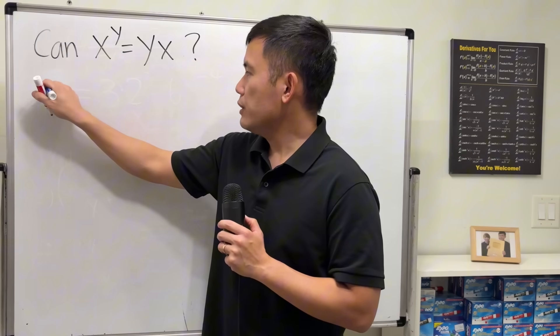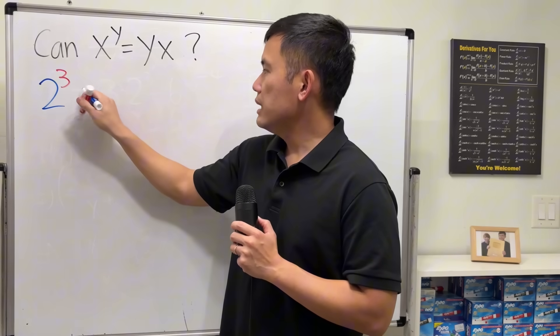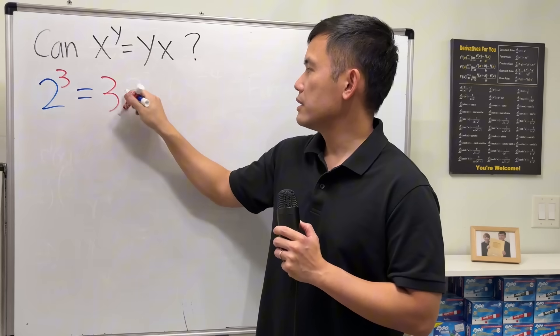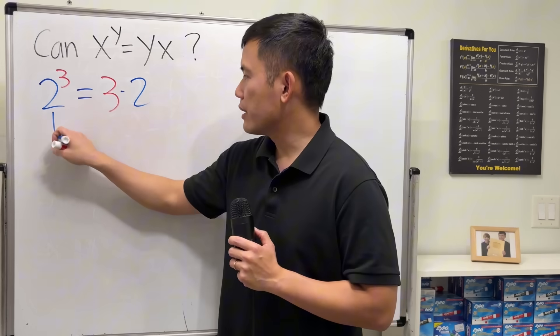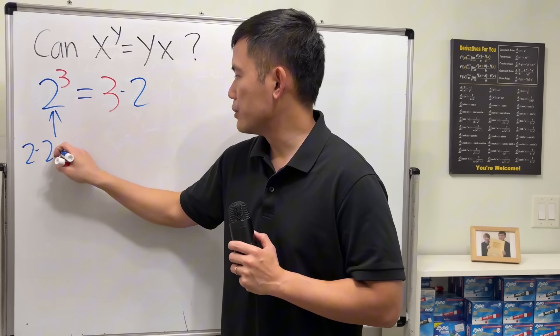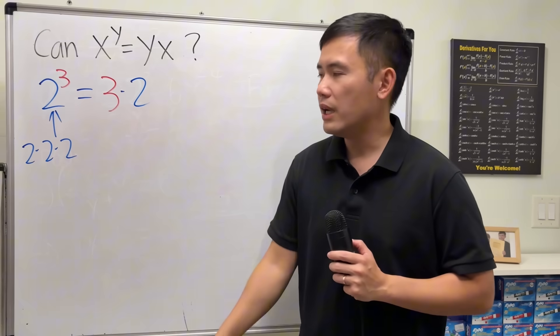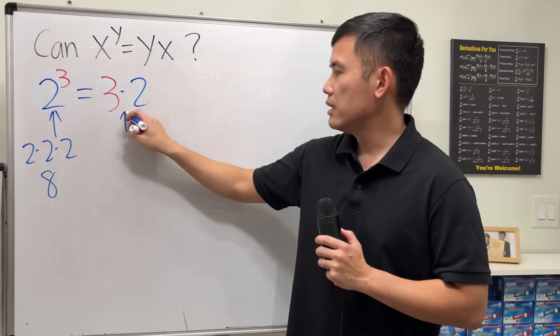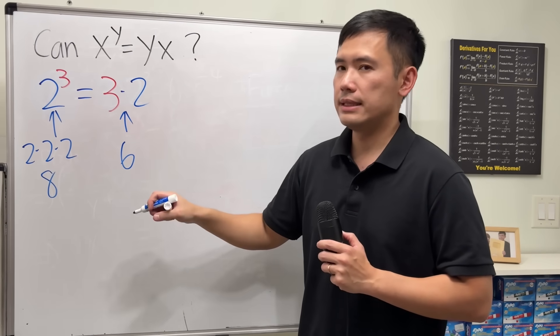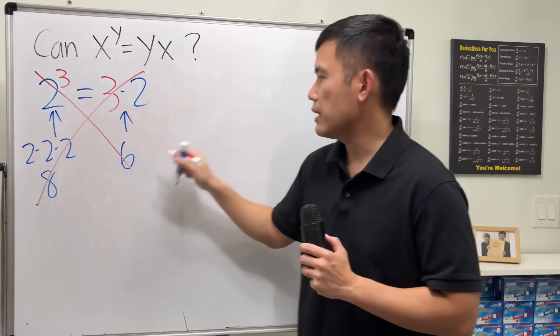Here, if we take a look at 2 to the third power, is this the same as 3 times 2? Well, of course not, right? Because this right here means we do 2 times 2 times 2 when we have a power, and that is going to give us 8. But when you just multiply 3 and 2 together, this is going to give us 6. So, of course, this is not correct.